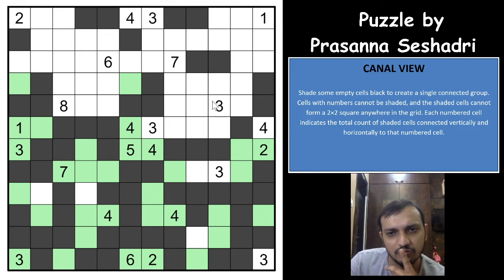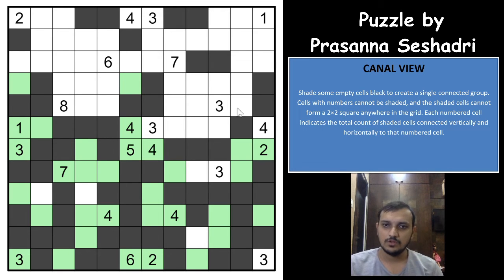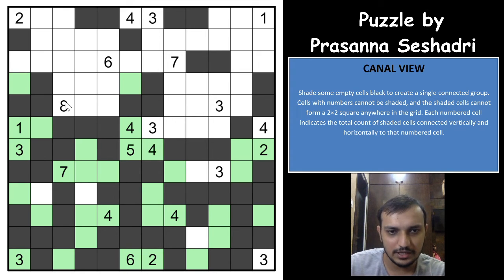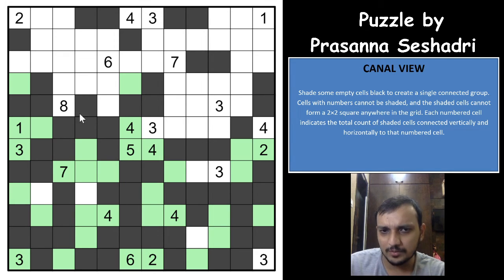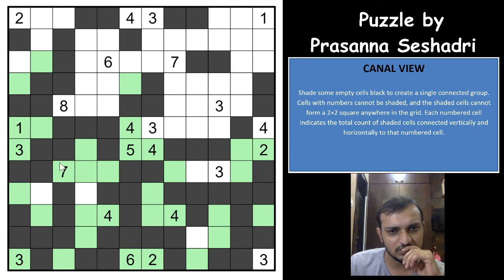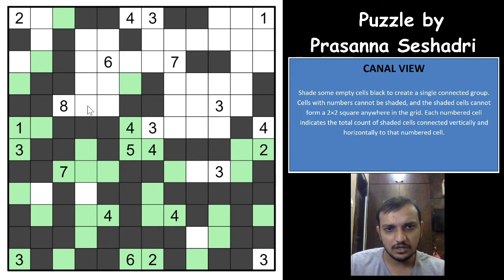For the 8 here: you have 1, 2, 3, 4 cells — you can have only 1 cell at maximum in this direction, making 5. So 6, 7, 8 would have to be here. You have cells 1 through 7 marked. The 8th cell can still be here or here — we are not sure. But we have marked the 7 cells already. This shaded cell would have to come out this way only.